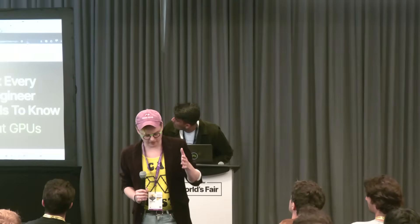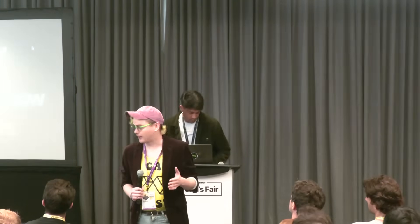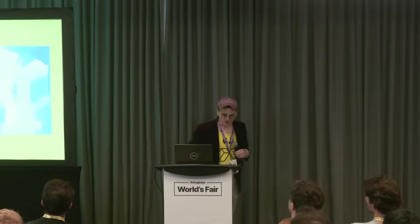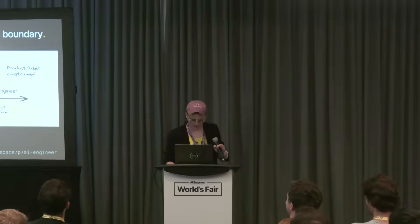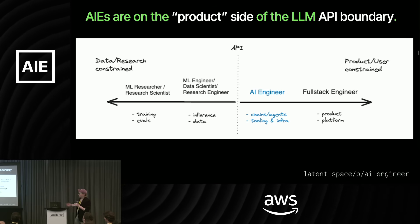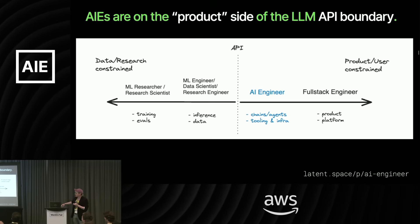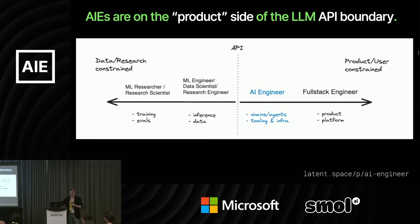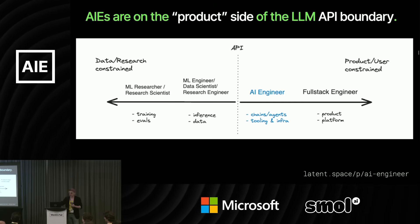Having that API boundary is pretty important. You can't really build a complex system if everybody has to know how every piece works and everybody has to know all of it in detail with no boundaries or breakdowns — you'll collapse in complexity if you do that. The AI engineer is on the right of the API boundary, constrained by the needs of users rather than what's possible with research or what infrastructure is capable of providing.